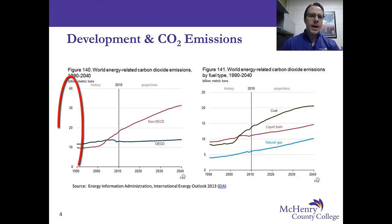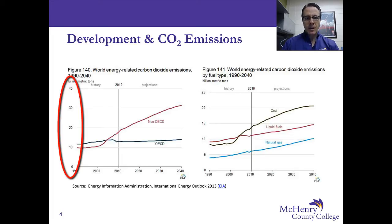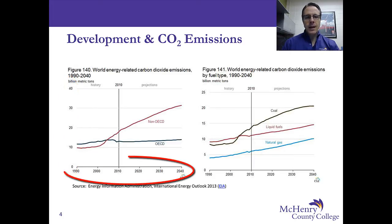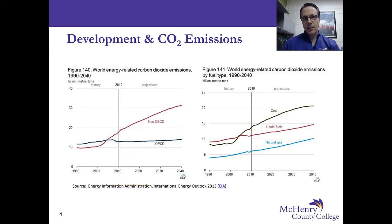The Y-axis of Figure 140 measures carbon dioxide emissions in billion metric tons — so we have 10 billion metric tons, 20 billion metric tons, etc. The X-axis has a time scale from 1990 to 2040, so we have some historical data and some data that's projected.